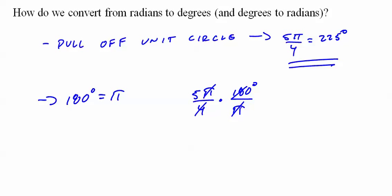4 goes into 180 45 times. Multiply that, you get 225 degrees. So those are the ways that you can do it.